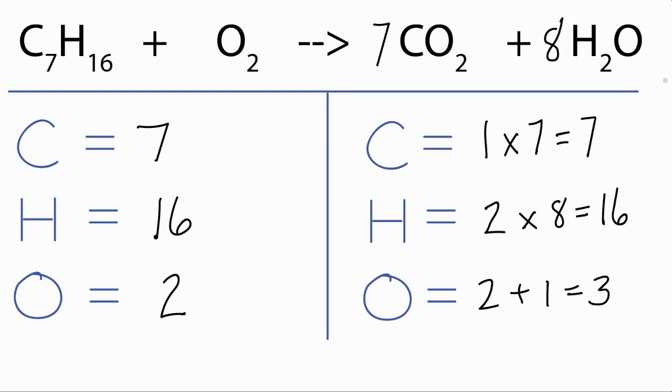Let's recalculate what we have for the oxygens on the right, on the product side. So with the carbon dioxide, we have seven times two, we have 14.